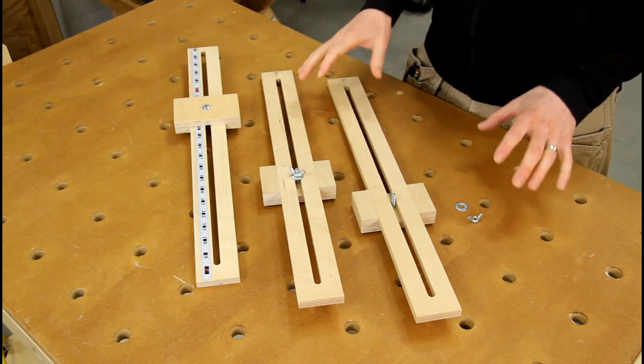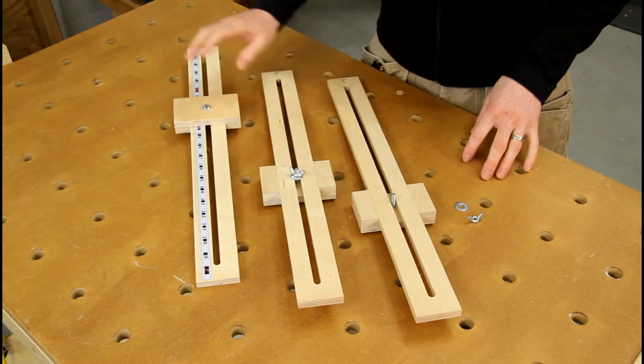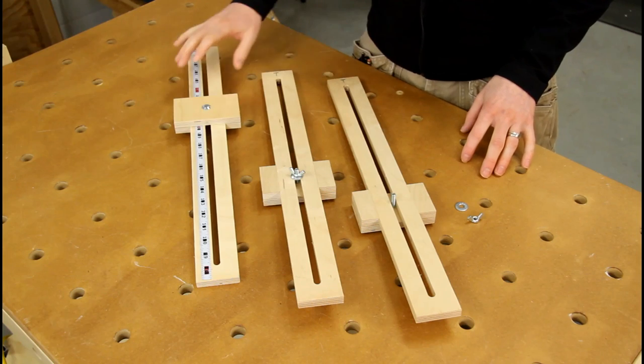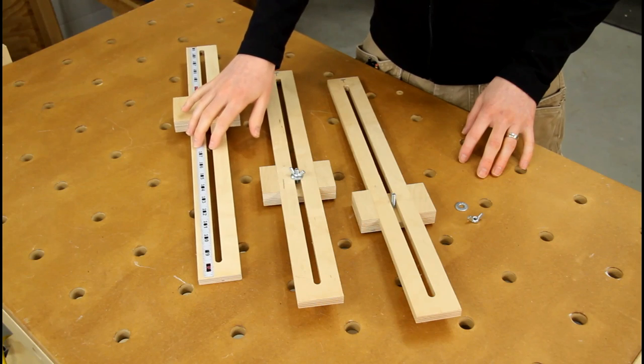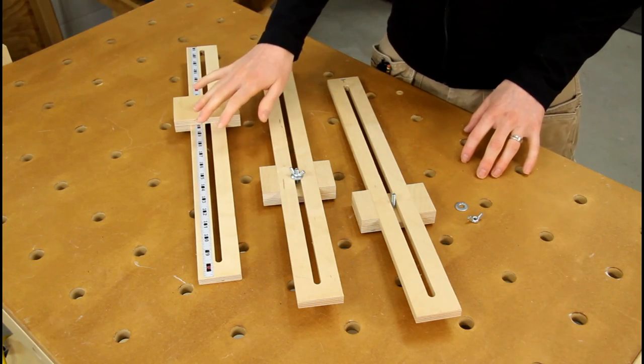The jigs are super simple. There's two parallel guide jigs and one setting jig. They're all made the same way, with the exception of the setting jig has a shallow dado milled in the face of it, and I'll talk more about that in just a minute.